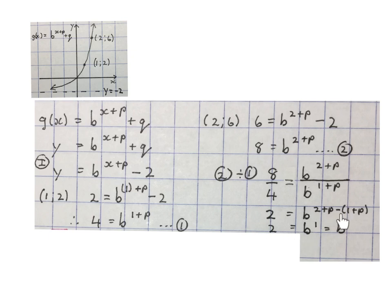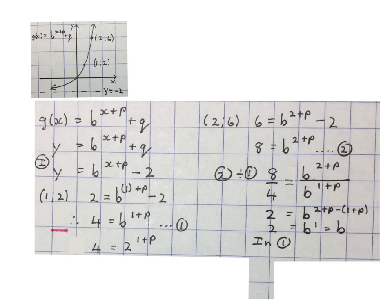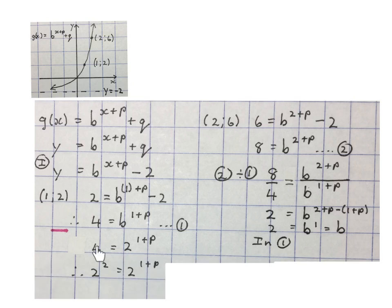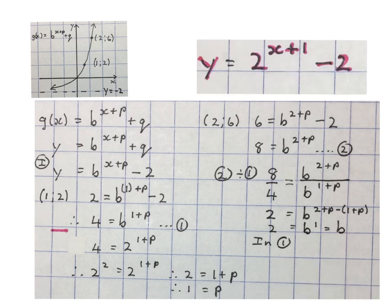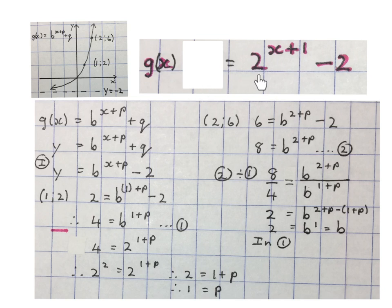The value of b is 2. We now substitute b = 2 back into either equation 1 or 2 to find the value of p. I substituted 2 in place of b and got the equation. Prime factorizing 4 gives 2², and since the bases are the same we can drop them, giving 2 = 1 + p, so p = 1. Our answer is y = 2^(x+1) − 2. The final answer to this question: g(x) = 2^(x+1) − 2. Please stop the video and get your brain around this.